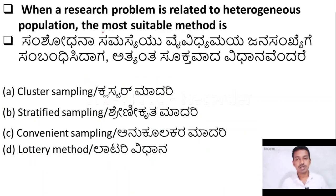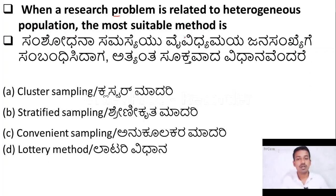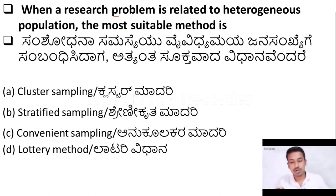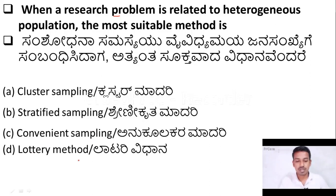Let us move to the questions. The first question: when a research problem is related to heterogeneous population, the most suitable method is — option one: cluster sampling; option two: stratified sampling; option three: convenient sampling; option four: lottery method.